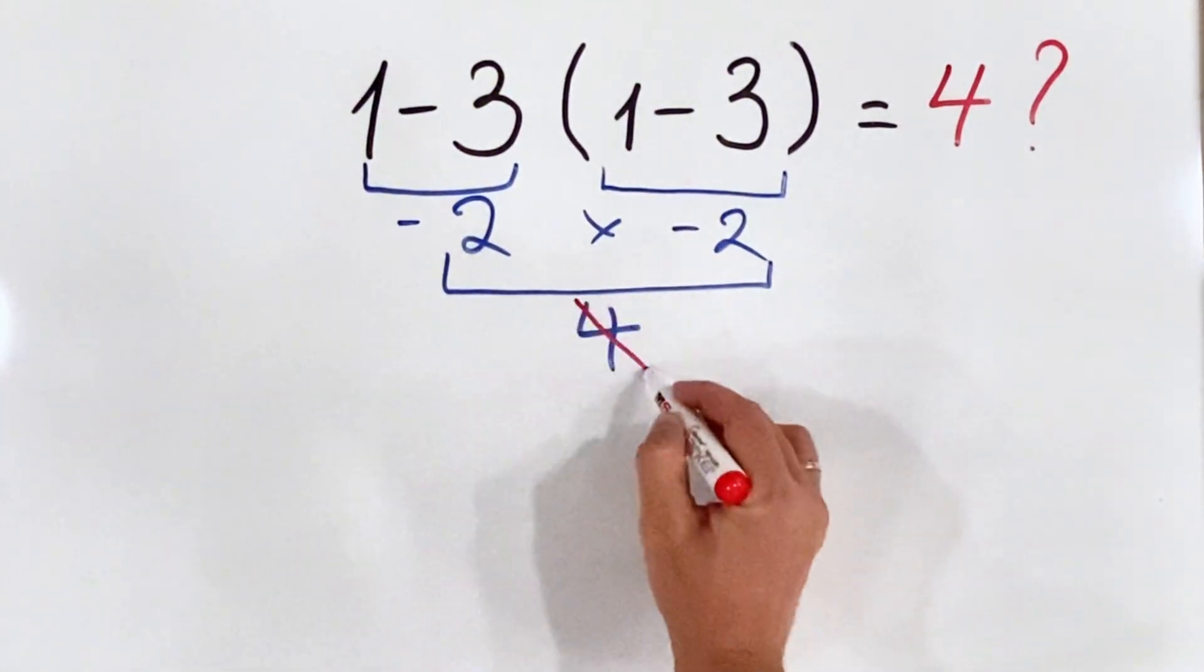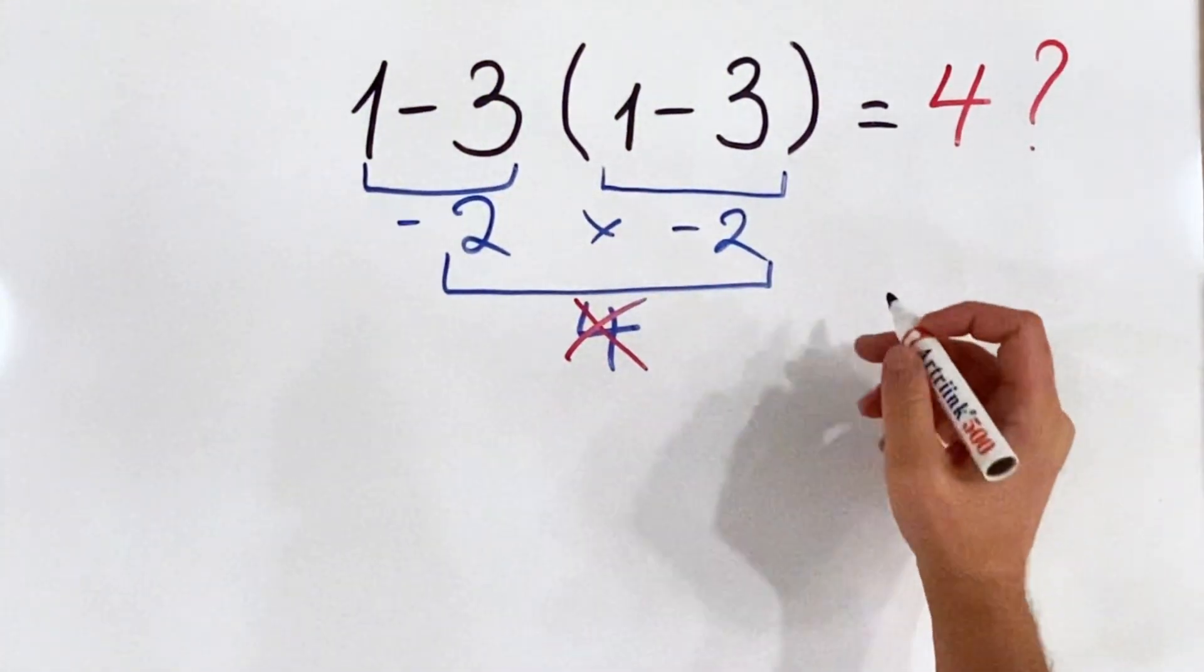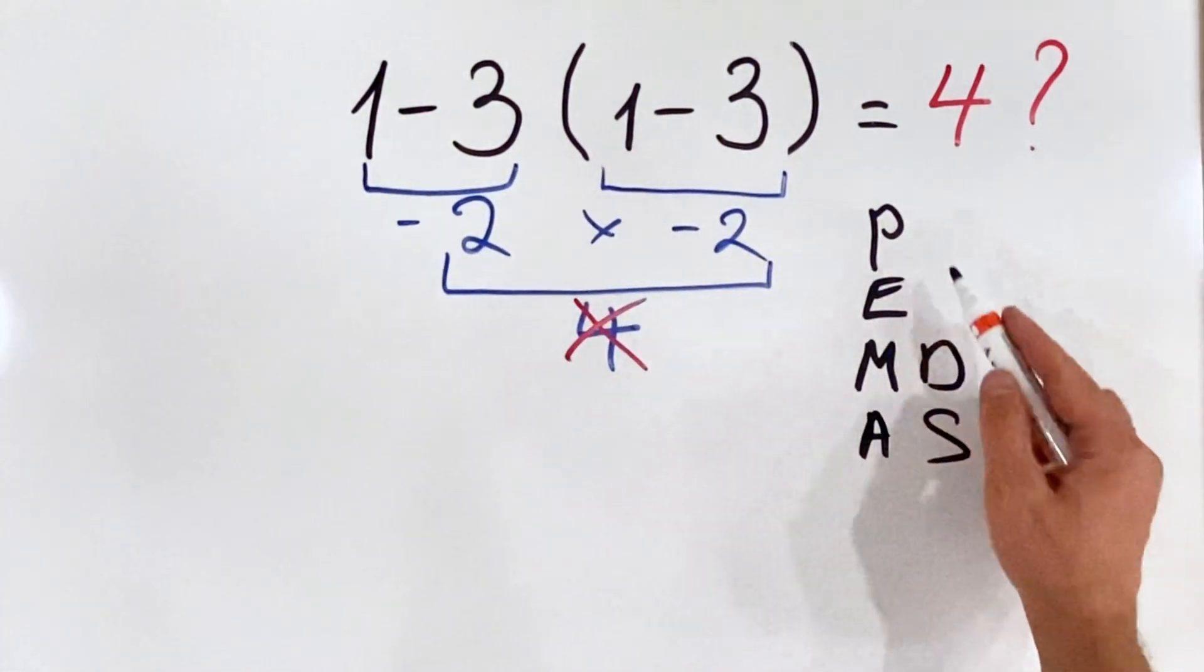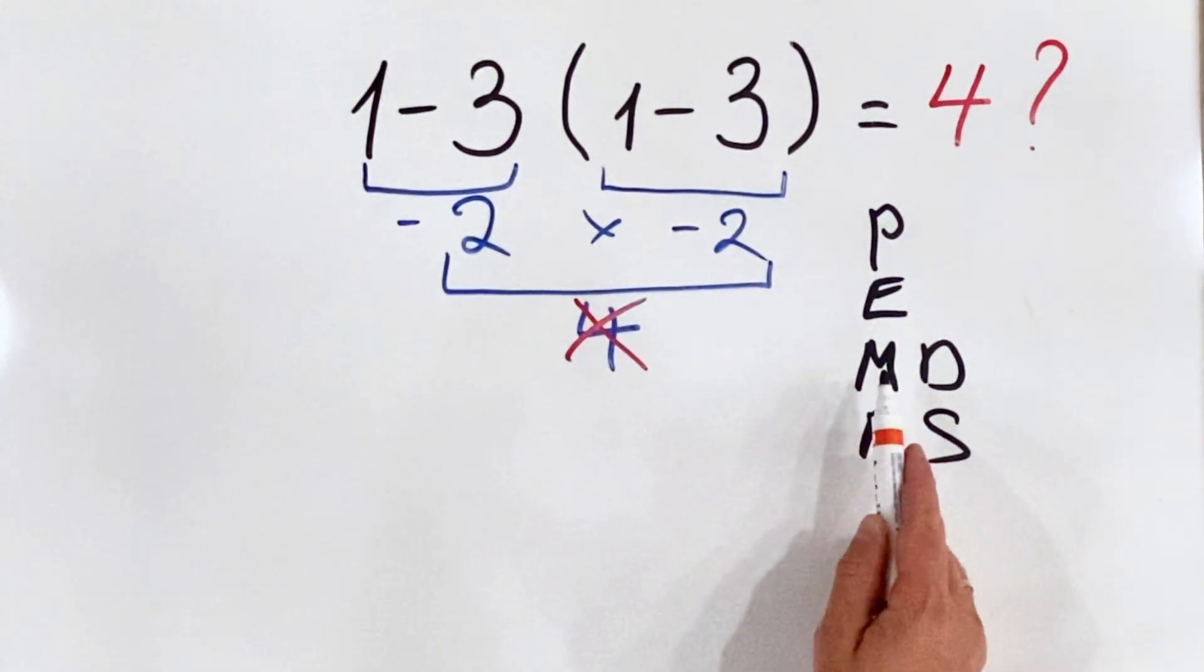But this answer is not correct because according to the order of operations, PEMDAS, where P stands for parenthesis, E stands for exponents, MD stands for multiplication and division, and AS stands for addition and subtraction.